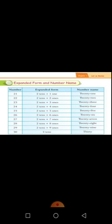Next, I am going to explain the expanded form and number name for the number 21. 1 is in the 1's place and 2 is in the 10's place. Expanding the number: 2 tens and 1 one makes 21. Number name: TWENTY-ONE, 21.